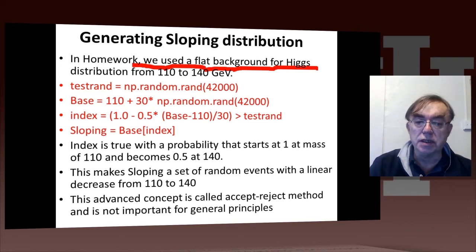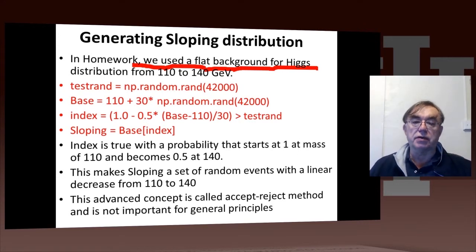But if you look at some of my initial plots, I actually had a sloping background. But it's not quite trivial to get a sloping background, because Python doesn't clearly give you a random number generator for a sloping distribution. However,